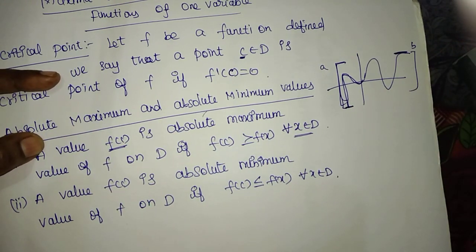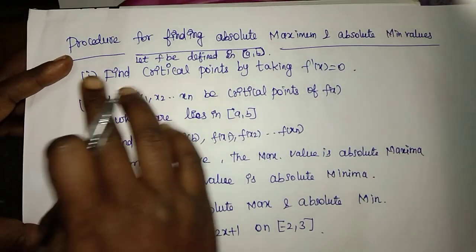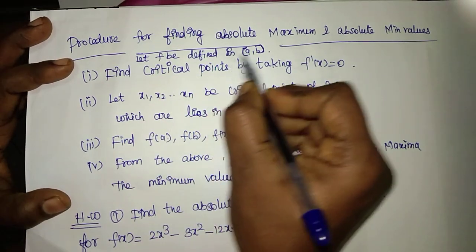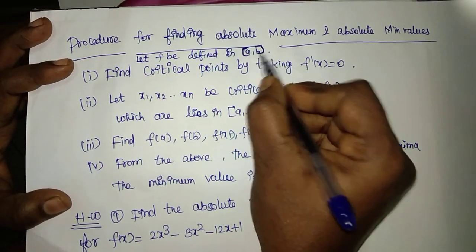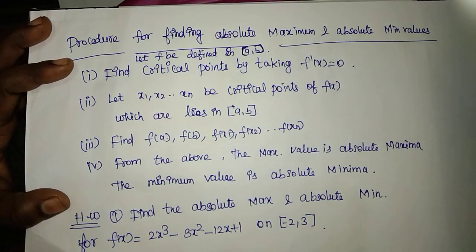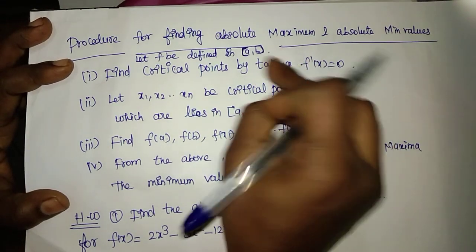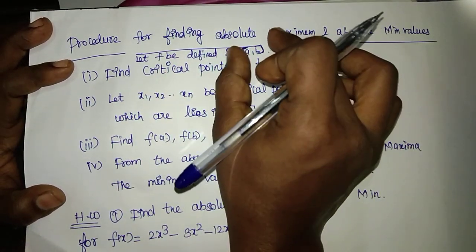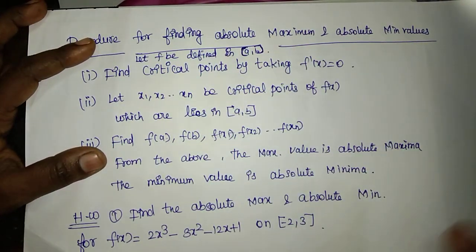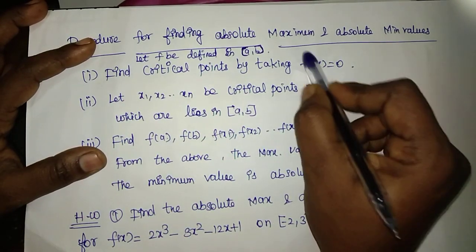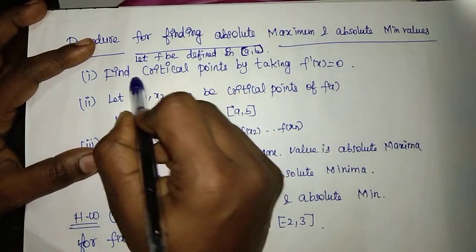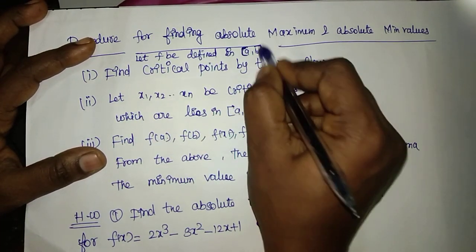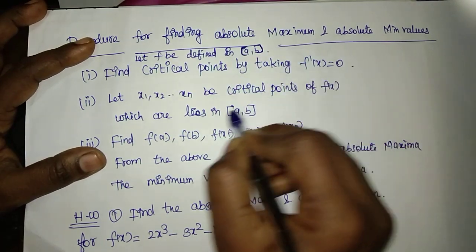Next, we will see the procedure for finding absolute maximum and absolute minimum values. Let F be a function defined on the interval [A, B]. To find the absolute maximum and absolute minimum, the first step is: find F prime of X, set it equal to 0, and find the critical points. If a critical point is not in the interval, we will exclude it.